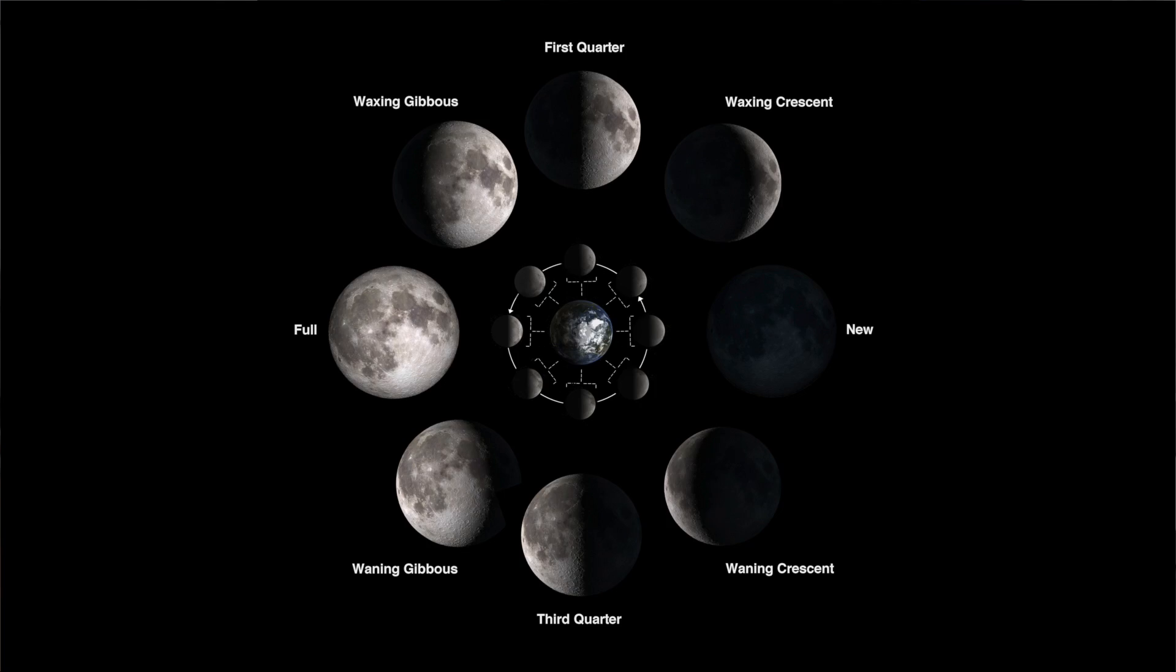A phase curve of an exoplanet is the amount of reflected light and emitted light from a planet as a function of its phase. So you're probably more familiar with phases of the moon: new moon, crescent, quarter, gibbous, full.